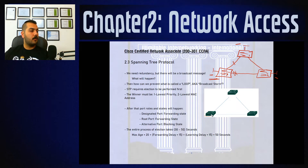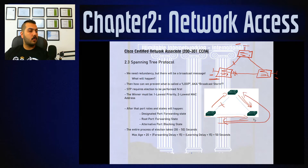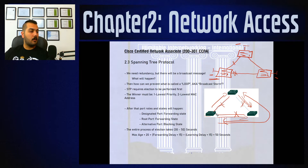As a matter of redundancy, I extend a third cable to form a triangle topology. Now if any single cable goes down, the switches can still communicate via the remaining paths. This triangle topology gives full redundancy — any single cable failure will not affect the network.